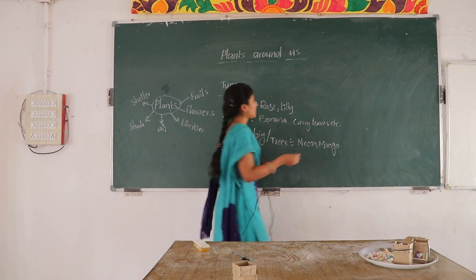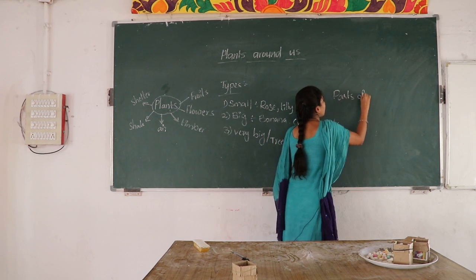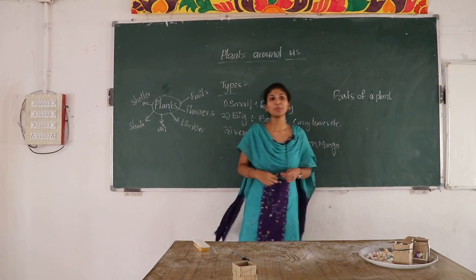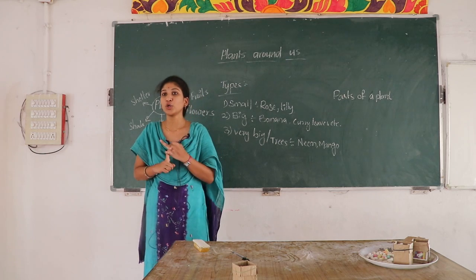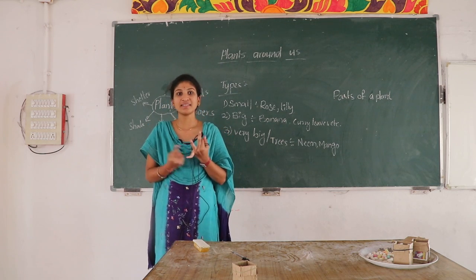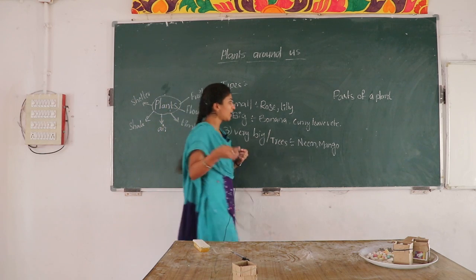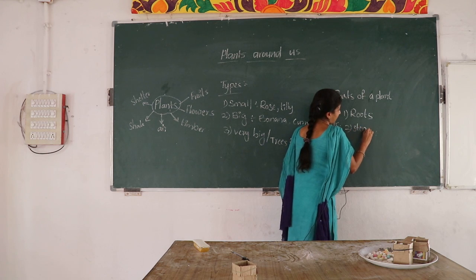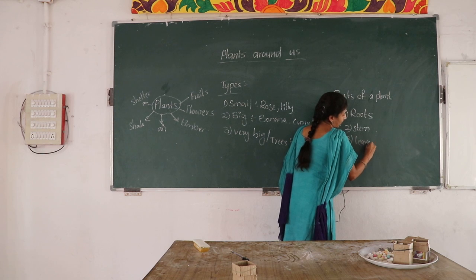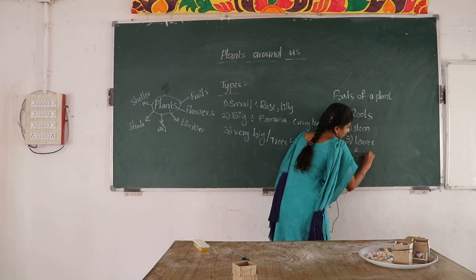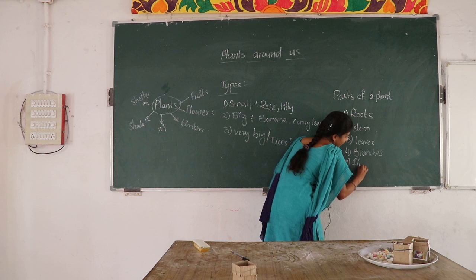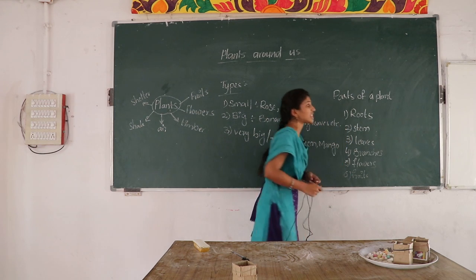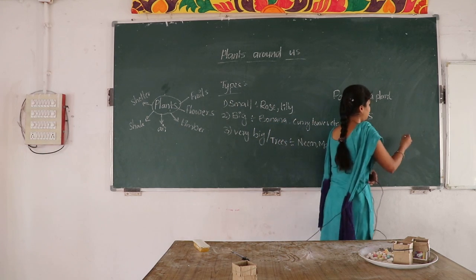Now, parts of a plant. Do you know parts of the plants? Roots, stem, leaves, branches, flowers, and fruits are the parts of the plant. Look at the board, I will draw one diagram.